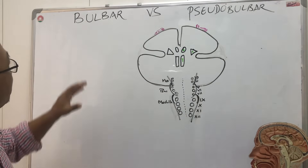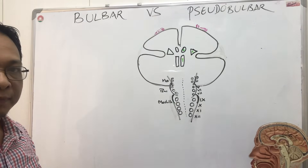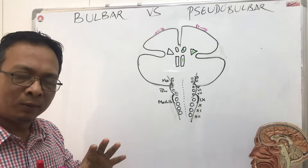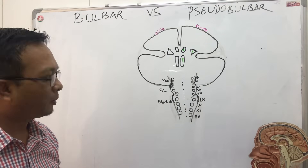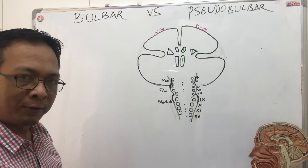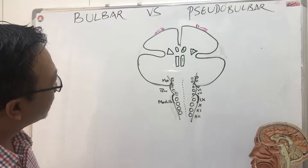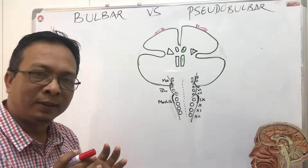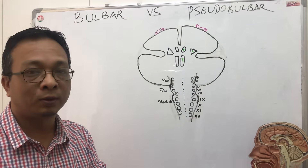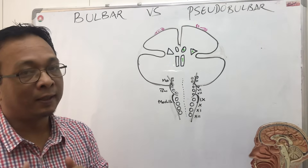Today we will discuss bulbar palsy and pseudobulbar palsy. To understand bulbar palsy, we need to have a little bit of knowledge about the corticobulbar tract. This corticobulbar tract comes with the corticospinal tract and is basically responsible for supplying impulses to the face, head, and neck.